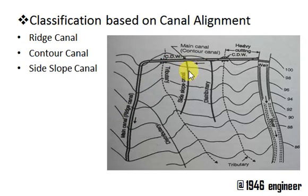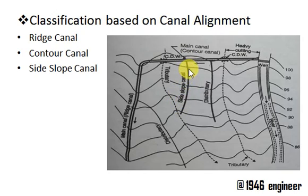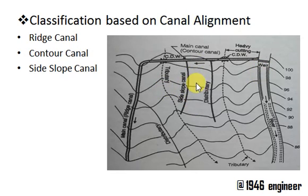When small distributaries from the contour canal are taken off, those are called side slope canals. These canals are not in the valley, nor directly along the main course — they are in between. Such canals are called side slope canals.